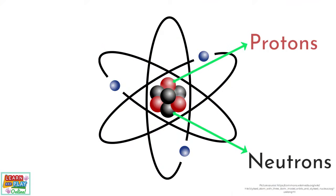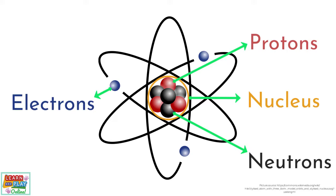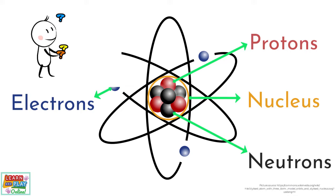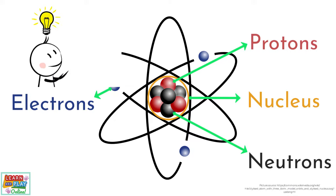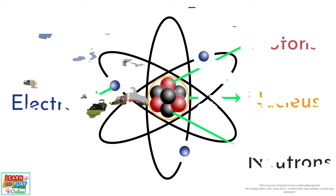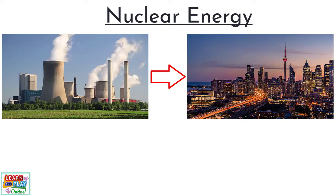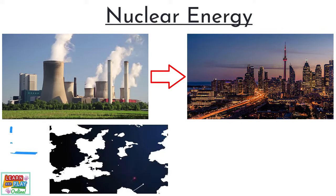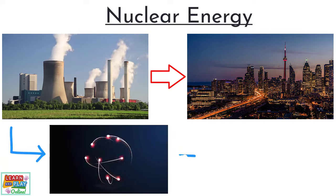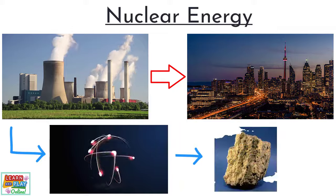The protons and neutrons are at the centre of an atom, and together they form what is known as the nucleus. The electron spins around the outside of the nucleus. Now that you know about the structure of atoms, you can begin to understand how nuclear energy is a form of potential energy. In order for nuclear power plants to generate electricity for whole cities around the world, they must release the energy contained in atoms found in a mineral called uranium.